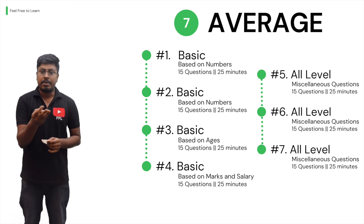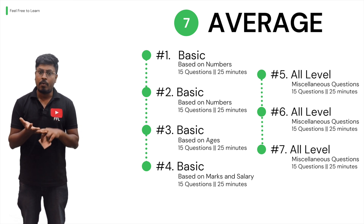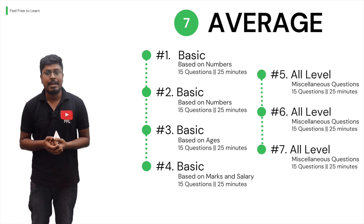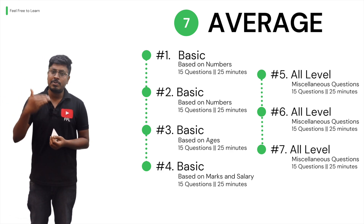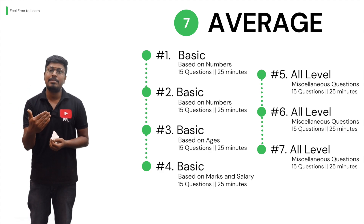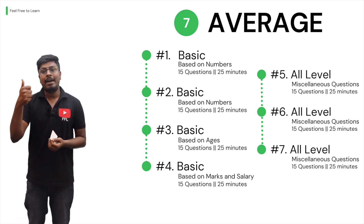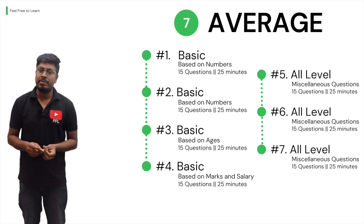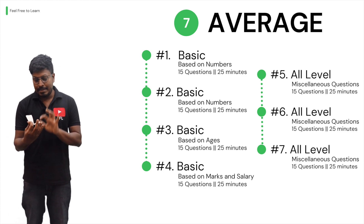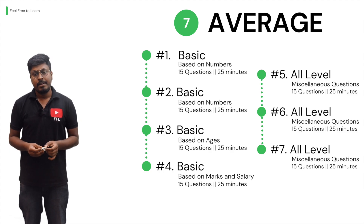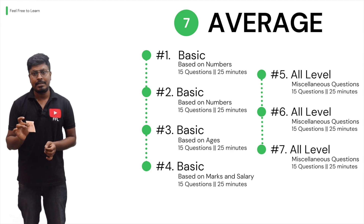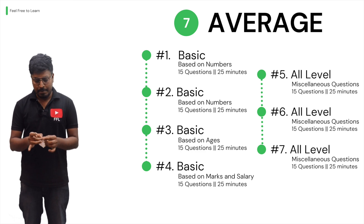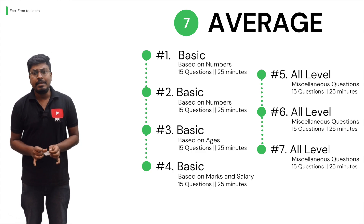Tests five, six, and seven cover all miscellaneous level questions on Averages. For example, questions based on true value and false value: there are 49 students in a classroom, a new student scoring 68 joins — what will be the new average of the class? All such miscellaneous questions appear in tests five, six, and seven. In total there are seven tests in the topic Averages, published today according to the schedule.